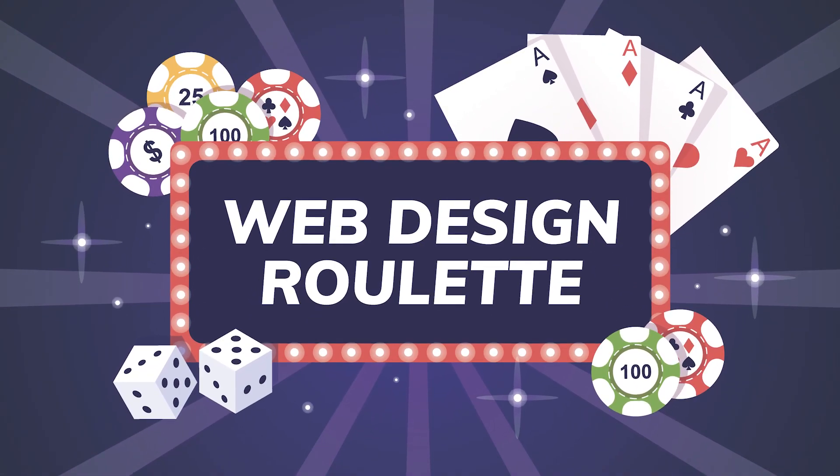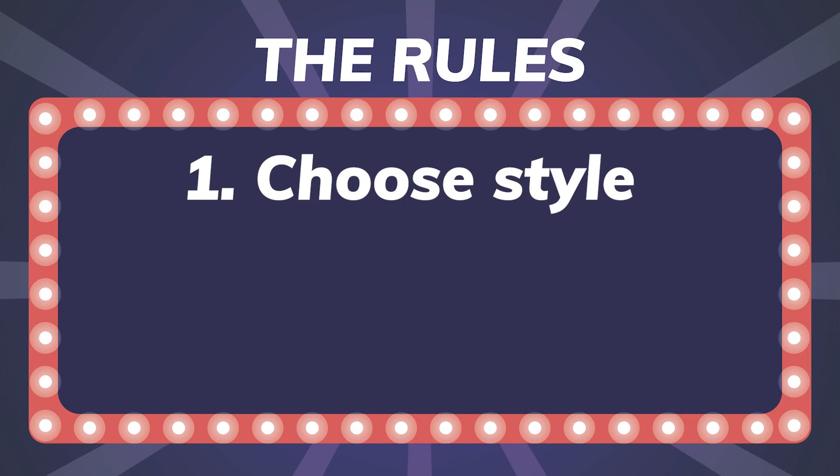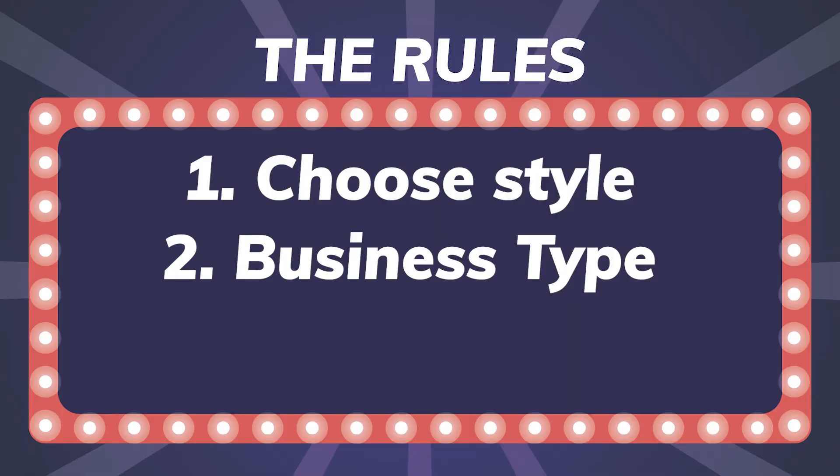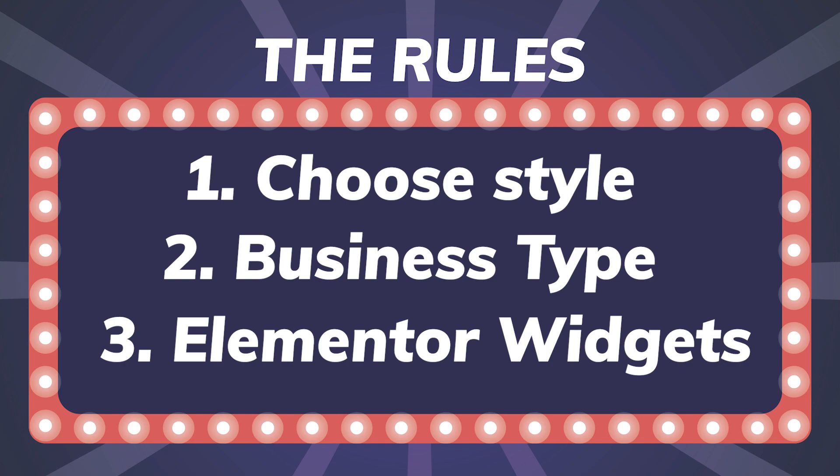Hi, it's Barbara, and welcome back to Wikidesign. Today, we are going to play another game of Web Design Roulette. I did this a few months ago and it was a lot of fun, so I thought, why not do it again? If you're not familiar with it, here are the rules of the game. I've written down a bunch of different design styles, a bunch of different small business types, and a bunch of different Elementor widgets. In round one, I will choose the style. In round two, I will select the type of business. And in round three, I will pick three Elementor widgets that I have to use in my final website design. So let's get started and play the game.